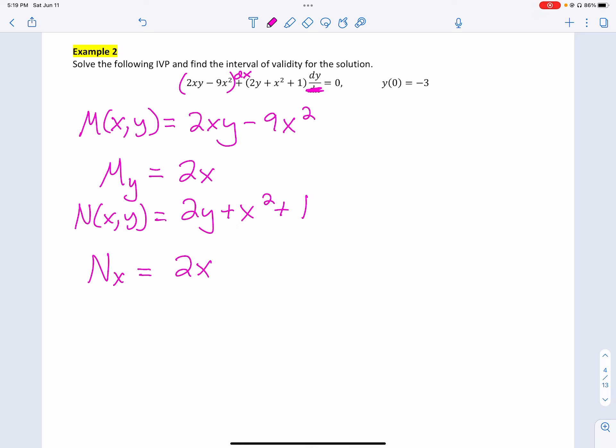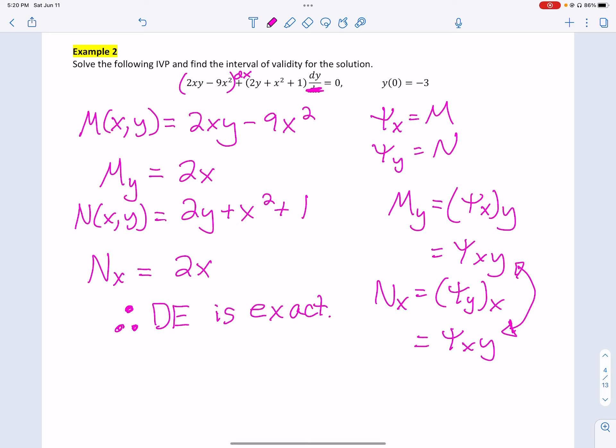N(x,y) is the other function, so it's 2y plus x squared plus 1. So N_x is what we want here, the partial with respect to x. I take that partial. 2y is a 0, x squared becomes a 2x, and then the 1 is a 0. So what we're actually saying here is there is some function. We're saying that M is that function when I do x, and that function when I do y will be N. What we just showed is if I do M_y, this is the same as N_x. And we just showed that these two things were equal. Since that is true, then we know that the DE that we're working with is exact.